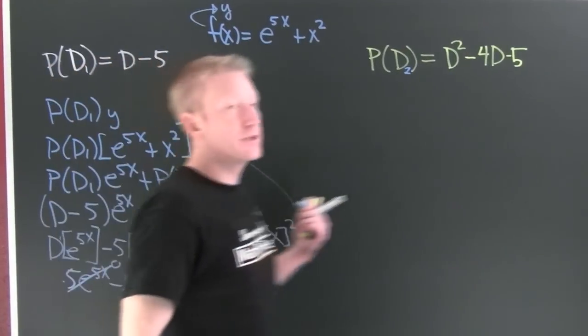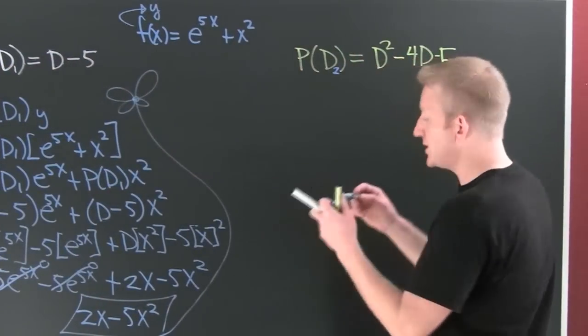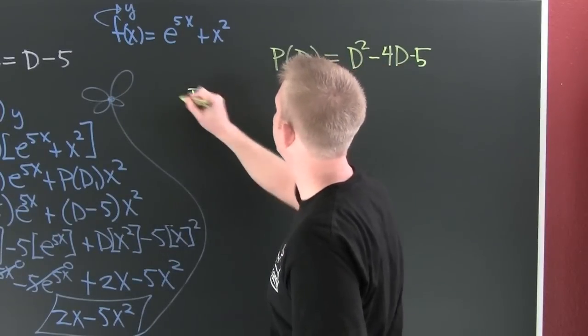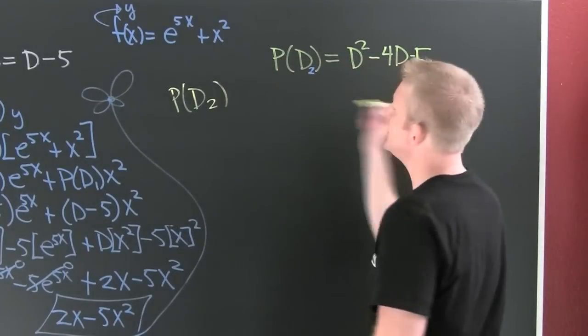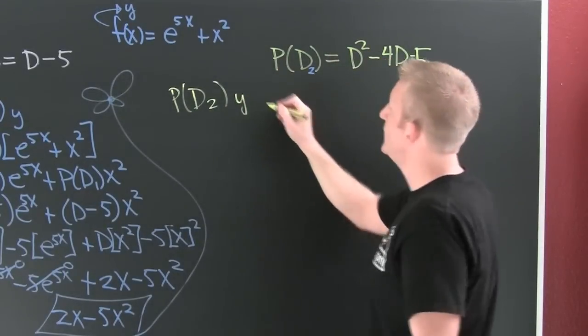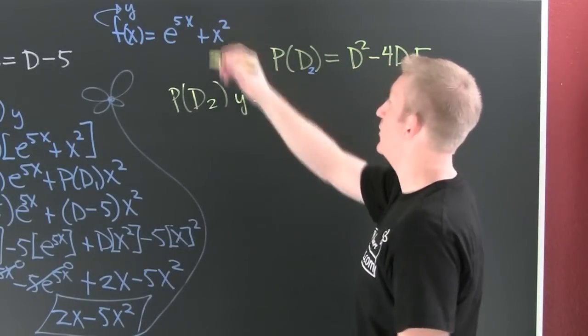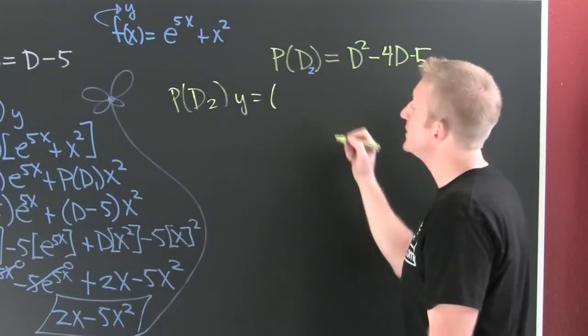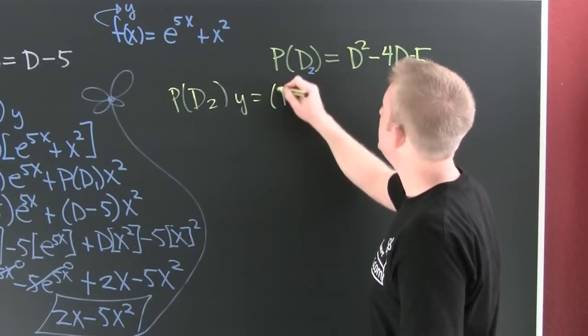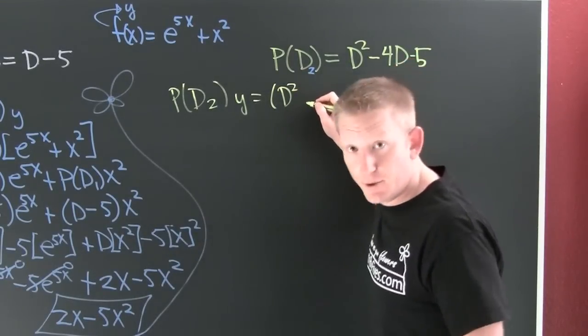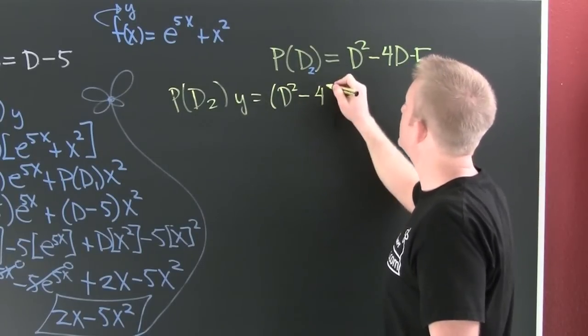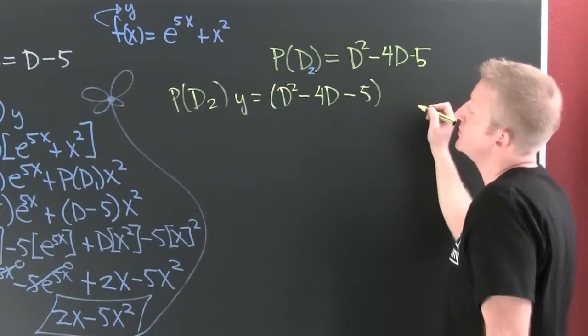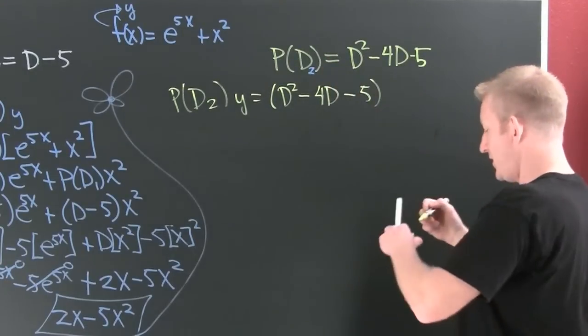A more explorative example, one that's a little bit harder. What if we are looking at PD2 acting on that function Y? We're going to see two derivatives of the function minus four times one derivative of the function minus five times the function. And what is that function? That function is e to the 5x plus x squared.